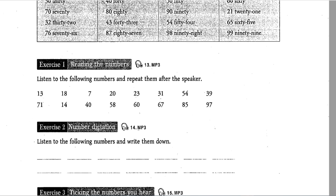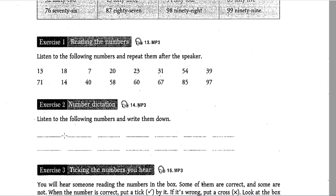Exercise 2: Number Dictation. Listen to the following numbers and write them down. 14, 17, 21, 24, 26, 35, 49, 55, 98, 40, 48, 42, 66, 73, 88, 57.